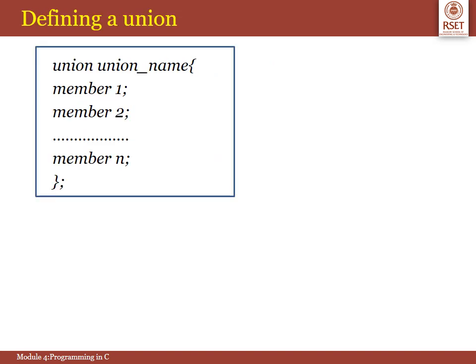Now we will see how we define a union. The union is defined using the keyword union followed by the name of that union. Like structures we can give each of the members with its data types. At last you have to terminate the union with a semicolon.